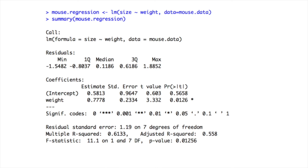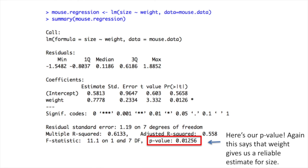The next line tells us if the R-squared is significant or not. This is the value for F. These are the degrees of freedom. And here's our p-value. Again, this says that weight gives us a reliable estimate for size.